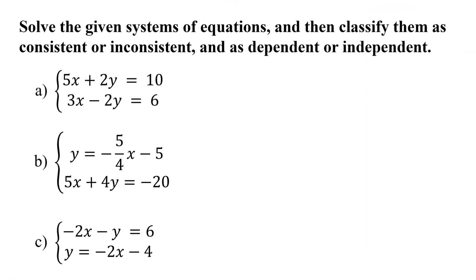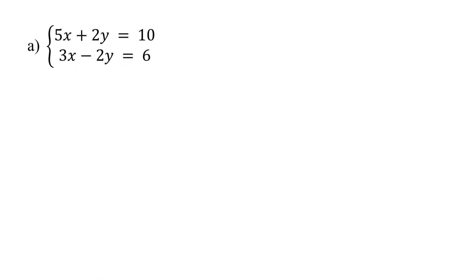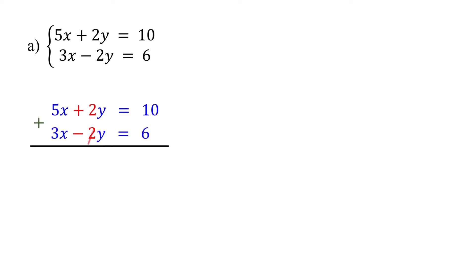Now let's look at examples. We will solve the given systems and classify them as consistent or inconsistent and as dependent or independent. Both equations are in standard form, so the most efficient method is elimination. We add the equations together to eliminate the variable with opposite coefficients. In this case, the y variable has opposite coefficients, so when we add the two equations, y is eliminated. Adding the remaining terms: 5x plus 3x equals 8x, and 10 plus 6 equals 16.